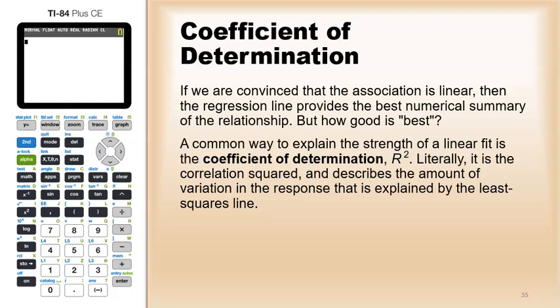And that's literally the correlation squared. And what this does is it describes the amount of variation in your y values in your response variables that can be explained by your x values. It's how much of the variation in your y values can be explained by your x values.